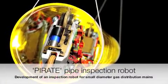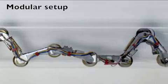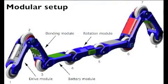In this video, the pipe inspection robot Pirate is presented. Pirate consists of seven modules for driving, clamping, and rotating itself in a pipe.